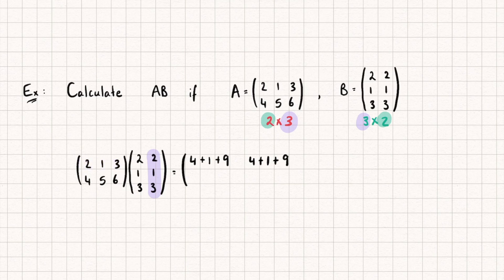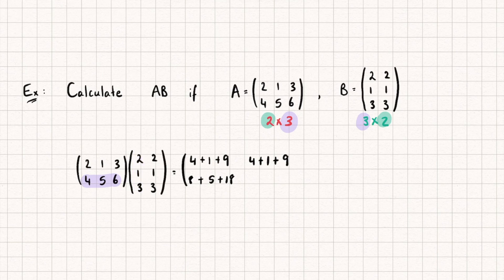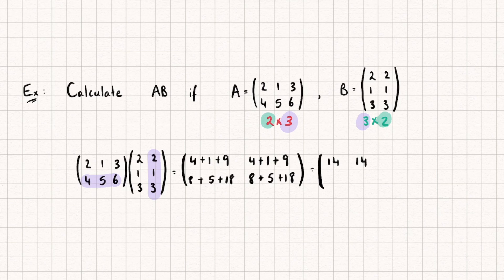For the bottom left element — second row of the first matrix multiplied by the first column of the second — we do 4 times 2 is 8, plus 5 times 1 is 5, plus 6 times 3 is 18, giving 31. And finally, the second row of the first matrix multiplied by the second column of the second matrix: 4 times 2 is 8, plus 5 times 1 is 5, plus 6 times 3 is 18, also giving 31. So our resulting 2 by 2 matrix has entries 14, 14, 31, 31. That is matrix multiplication.